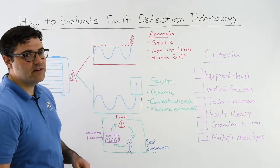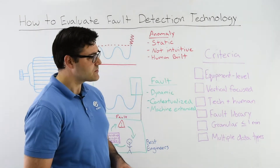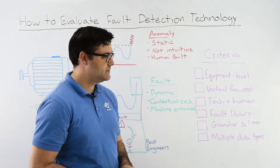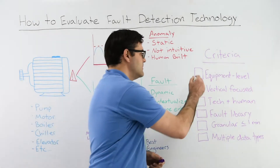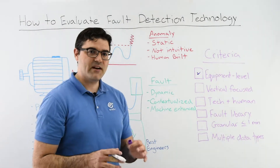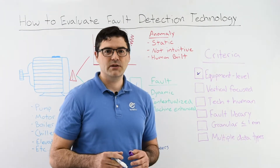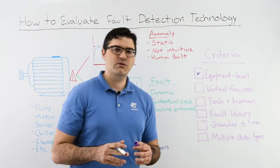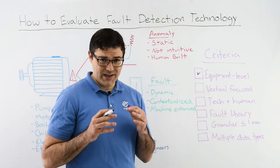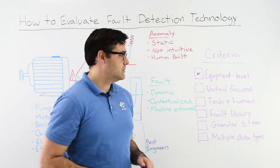So what are the criteria you need to consider when evaluating this kind of solution? Number one: equipment level data. What does that mean? It means getting very granular data on the critical pieces of equipment we mentioned, that will get you the data you need to make sure your building is running 100%.